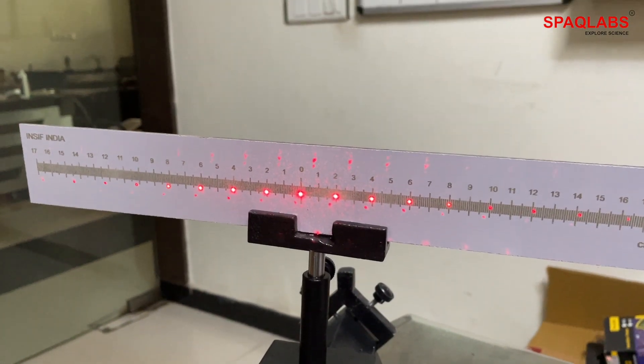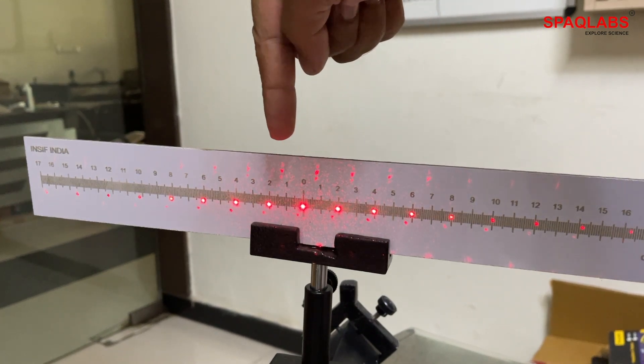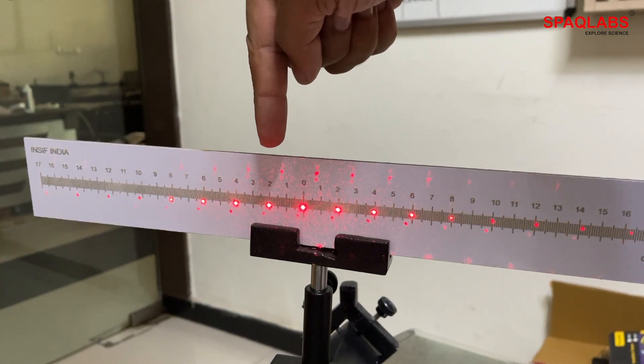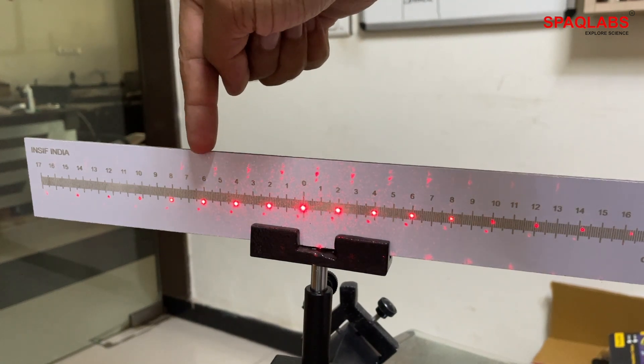Now let's calculate the value of theta. For that, we need to take the distance for first order from center, which is 20 millimeters. For second order, it's 40 millimeters, and 60 millimeters for third order.